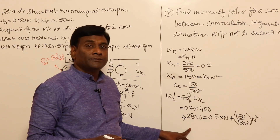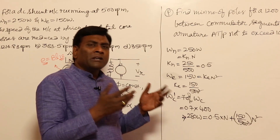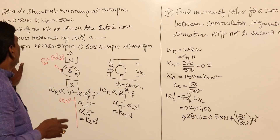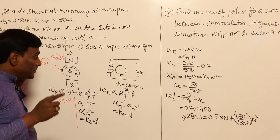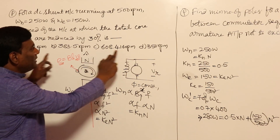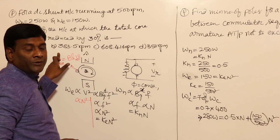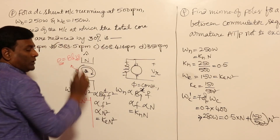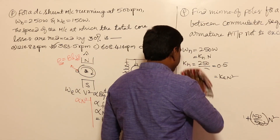Rather than using the quadratic formula, substitute the multiple-choice options. Since total core losses must be reduced, the speed must be lower than 500 rpm, so options above 500 rpm are eliminated. Checking the option N = 383.5 rpm in the equation gives 280 W, confirming it is correct. The answer is option B.